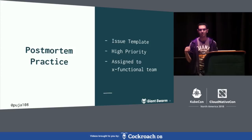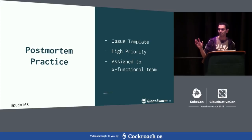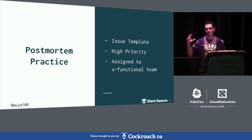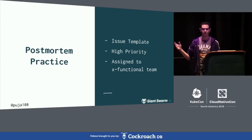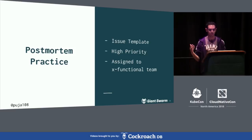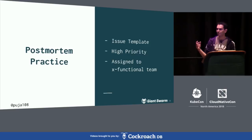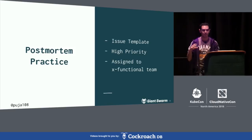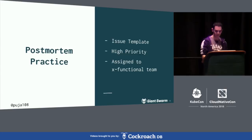What helps us is we use issue templates in GitHub — we just use plain GitHub, not Jira. The issue template helps gather all the information. It reminds us to add logs, screenshots, upstream issues, and maybe a suggested fix since you've already had to fix it in production. We give these issues very high priority — higher than our product issues — and they're assigned to a cross-functional team so they can be solved within a single team.